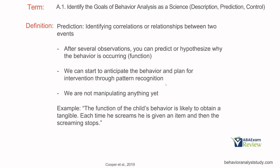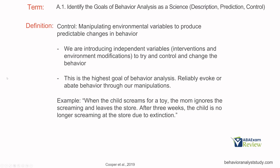Now that we've made our prediction, we have an idea of what the function is. We've established correlations. The final level of understanding is going to be control. We determine the function. We've hypothesized why it's occurring. We now need to write our treatment plans and implement them and manipulate variables to produce those changes in behavior. So we're introducing independent variables, which is typically our interventions and environmental modifications, to try and control and change the behavior. We are trying to reliably evoke or abate behavior through our manipulations.